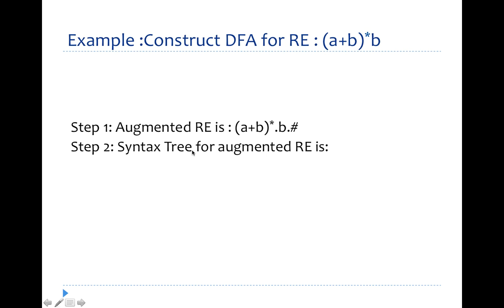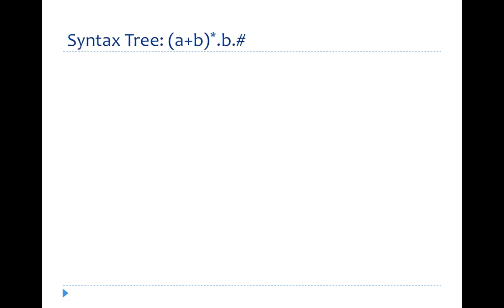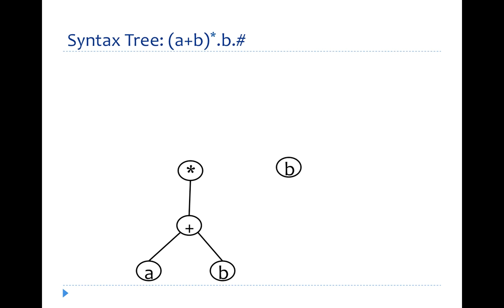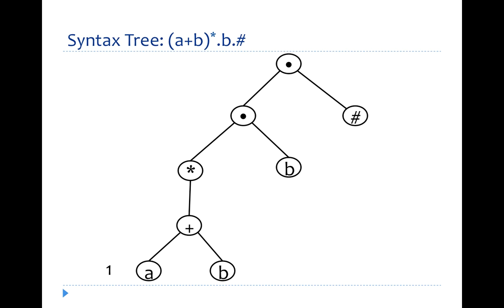The second step is to obtain the syntax tree for (a + b)* · b · #. The syntax tree has a + b under a closure (star) node, then concatenated with b, and then concatenated with hash. The leaf nodes are labeled with their positions: a is labeled 1, b is labeled 2, b is labeled 3, and hash is labeled 4.